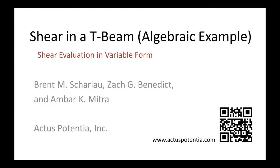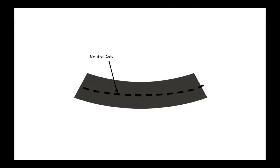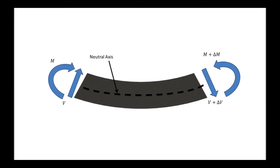Today we're going to evaluate the shear stress in a T-beam cross-section using only variables — no numbers are required. Here we have a generic section from a beam with the neutral axis placed as such, and we're going to load it with a force V and V plus dV, as well as a moment M and M plus delta M.